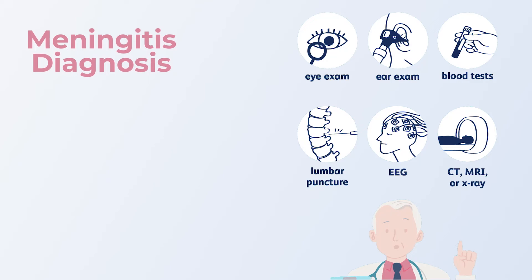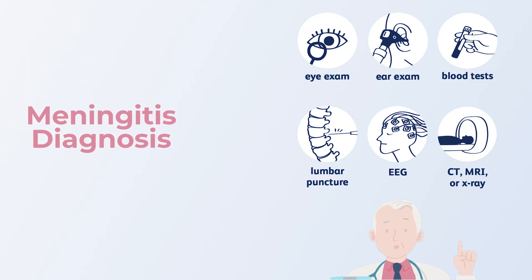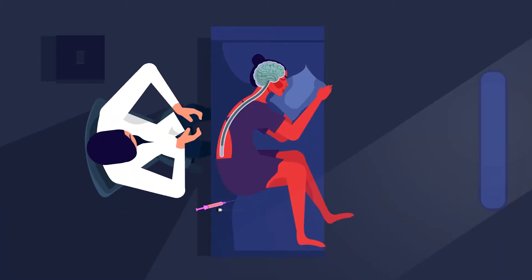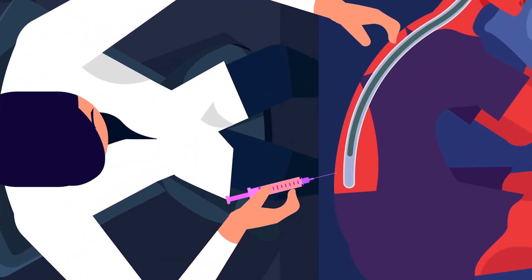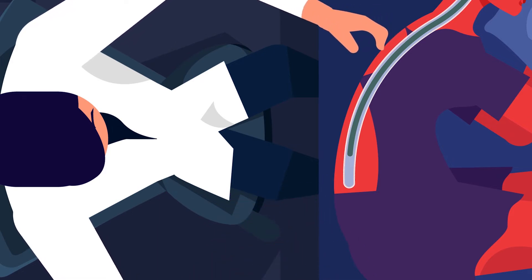Once the doctor thinks the child has meningitis, the diagnosis process begins. This involves a blood test, perhaps a chest X-ray, and sometimes a throat culture. But the most important test is what we call spinal fluid analysis — you take some fluid from within the spine, from between the bones where the spinal cord ends, and send it for testing. This sample is also sent for culture.